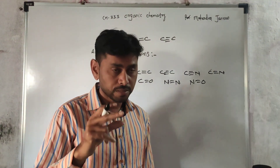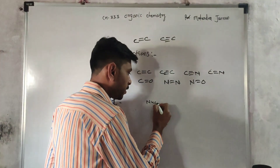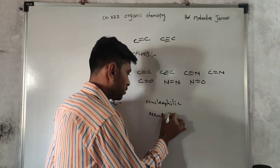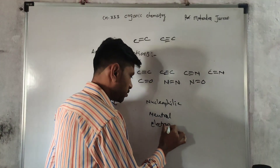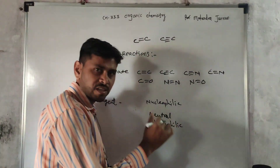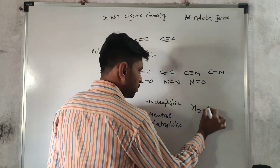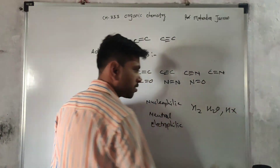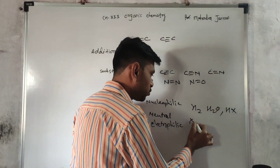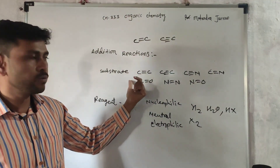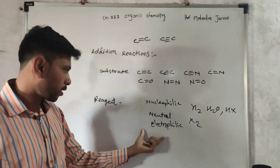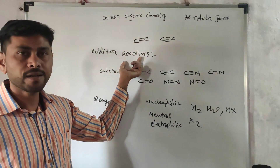Which reagents are there? Reagents are of different types. Reagents may be nucleophilic — meaning electron rich — or may be neutral, or may be electrophilic — meaning electron seeking. Examples include H2 as a neutral reagent, H2O as a nucleophilic reagent, HX as a nucleophilic reagent, and X2 — additional halogens. These are different reagents we can add into the substrate.